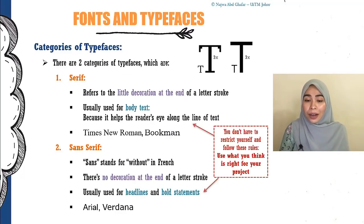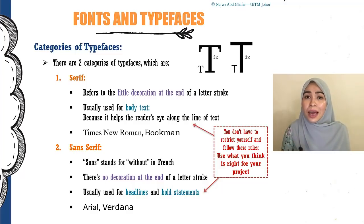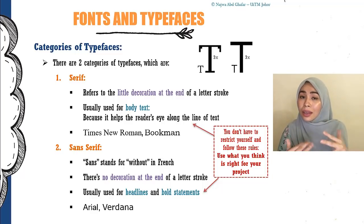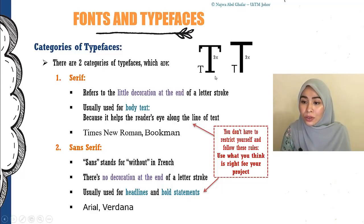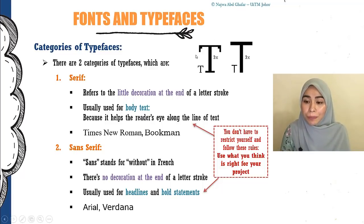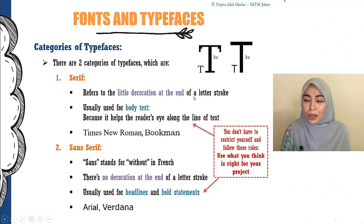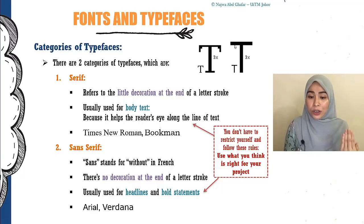There are two categories of typefaces. Typefaces like Times New Roman, Arial, and Comic Sans will each be categorized into one of these two: serif or sans serif. Serif refers to any typeface with decoration at the end of a letter stroke. Looking at the first image, it is a serif typeface because at the end of the stroke, you can see there's a decoration. A sans serif, on the other hand, does not have decoration at the end. Sans means 'without' in French. If you look at the second image, the stroke just cuts off — so there's no decoration. That is sans serif.